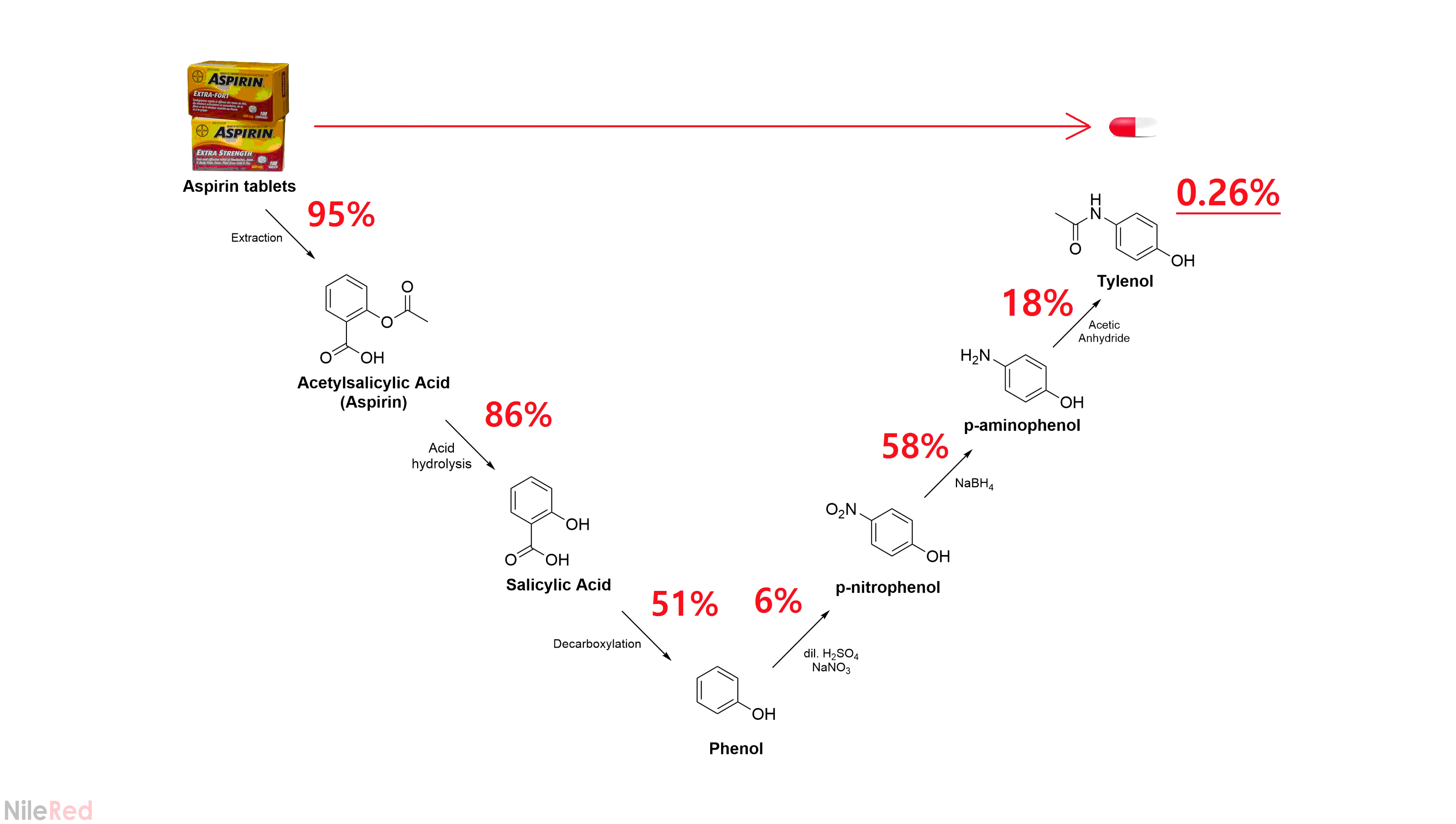An inherent problem with synthetic pathways like this is that the yield is sequentially whittled down with each step that you have. No matter how efficient your steps are, unless they're a hundred percent efficient, you're going to lose something with each one. Even if I got an 80% yield for every single step, my final percent yield would only be 26%. This is just one reason among many why when you're synthesizing something, you want to use the fewest steps possible.